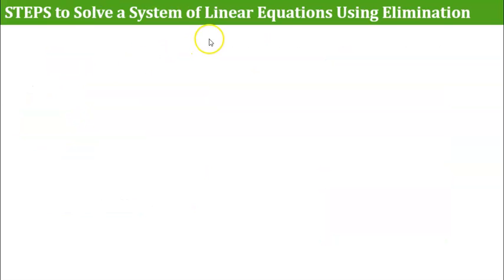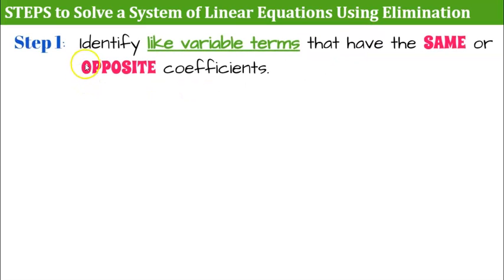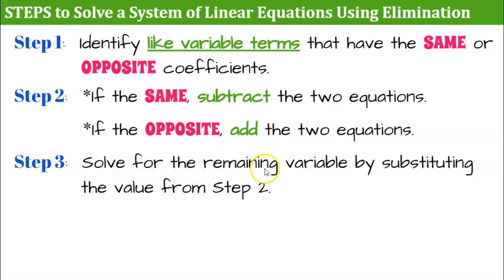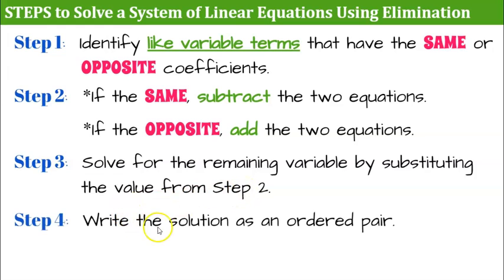Now let's go over the steps to solving a system of linear equations using elimination. Step 1: identify like variable terms that have the same or opposite coefficients. Step 2: if the coefficients are the same, subtract the two equations; if they are opposite, add the two equations. Step 3: solve for the remaining variable, then substitute back to solve for the other variable. Step 4: write the solution as an ordered pair. Step 5: check your solution. The solution is the ordered pair where both lines would intersect when graphed.